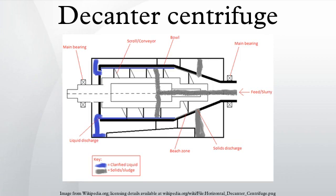The decanter centrifuge cannot separate biological solids with very small density differences, such as cells and viruses. A competitive process capable of separating these difficult-to-separate solids is the tubular bowl centrifuge. The machine can be very noisy and can cause vibration. The device has a high energy consumption due to high G-forces and high equipment capital costs. Hard surfacing and abrasion protection materials are required for the scroll to reduce wear and maintenance.